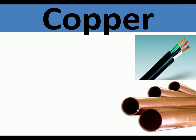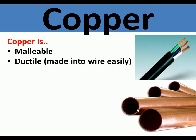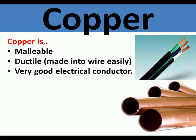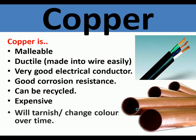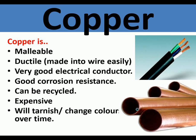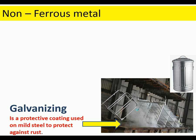Copper is malleable and ductile, so it can be made into wire easily. It is a very good electrical conductor with good corrosion resistance, and can be easily and widely recycled. However, it is more expensive than aluminium. It does tarnish and change colour over time, but it doesn't readily corrode.